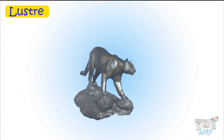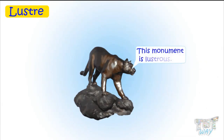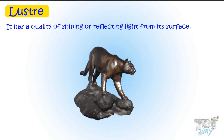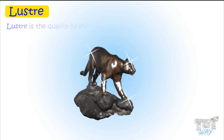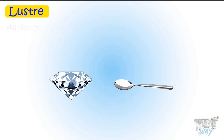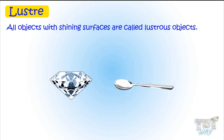Lustre. We can say this monument is lustrous. But why? We will call it lustrous because it has a quality of shining or reflecting light from its surface. So lustre is the quality of shining by reflecting light. All the objects with shiny surfaces are called lustrous objects.